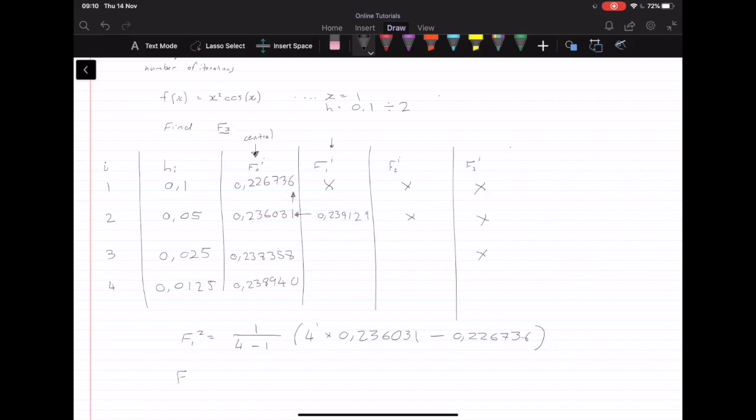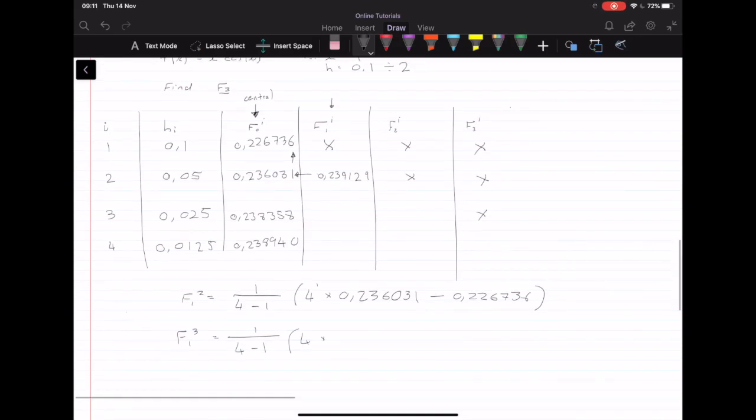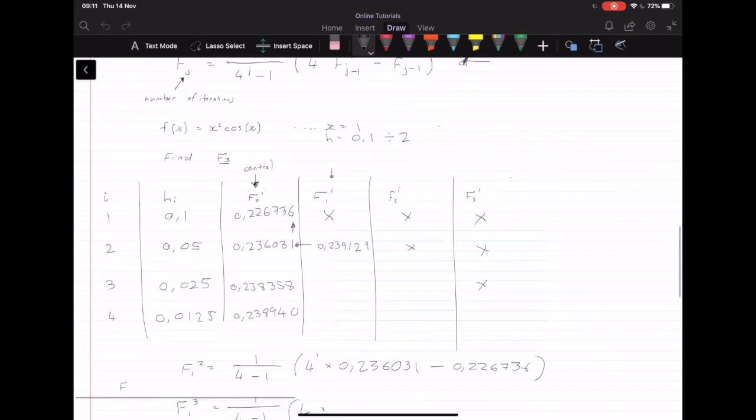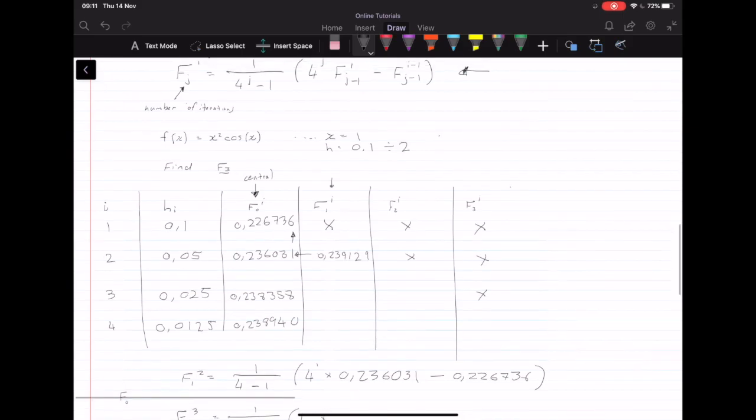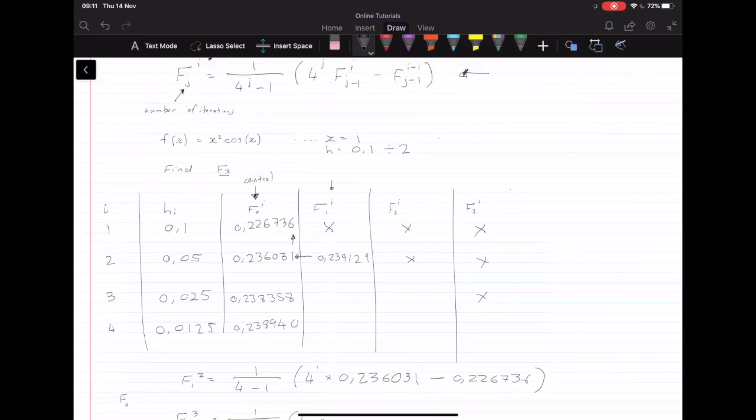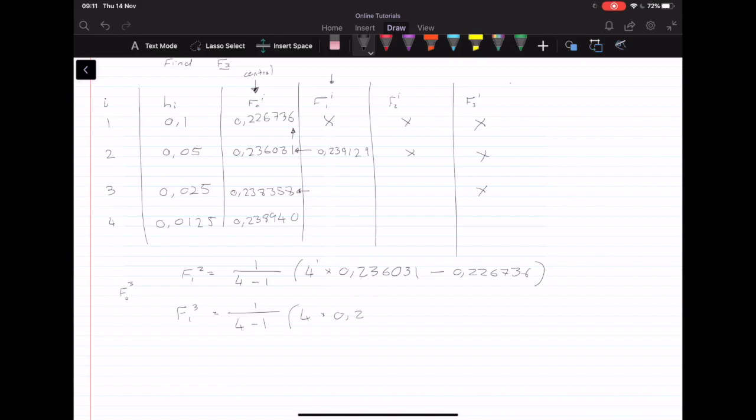During the second one, we have f¹_₃, which equals 1 over, again, j equals 1, 4 minus 1, 4 times. So we're looking for f⁰ and i of, now we're looking at i3. So we're looking at that value right there. So we have times 0.238358, minus, and it's going to be the value above it, 0.236031. And we get a value of 0.239134.